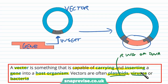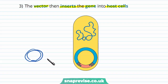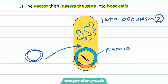Viruses and bacteria can also serve as vectors, as they are types of pathogens. At this point the vector contains the gene, but it hasn't yet been transferred to the second organism. So next, the vector inserts the gene into the host cell. We insert the plasmid into organism number two — the bacteria takes up the plasmid, and because it's taken up this recombinant plasmid, it now has the extra gene that we've inserted.